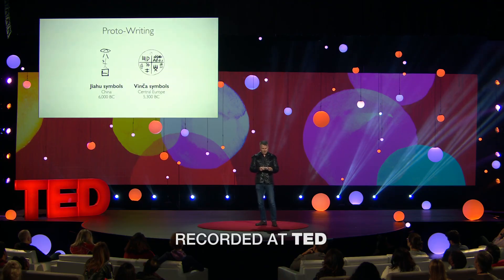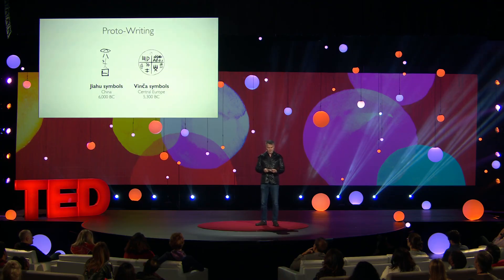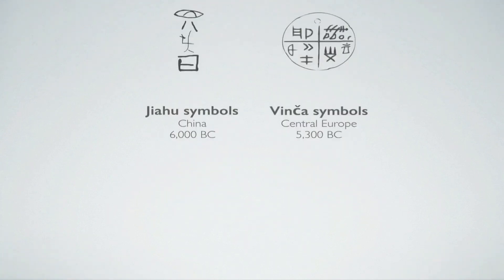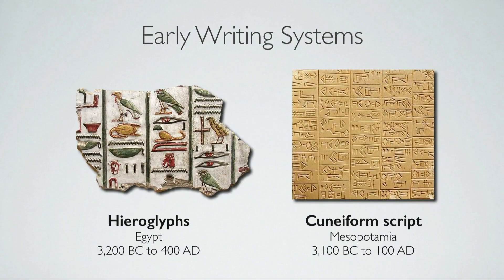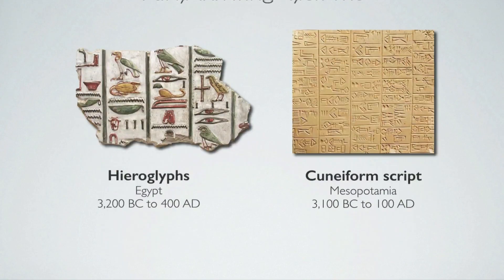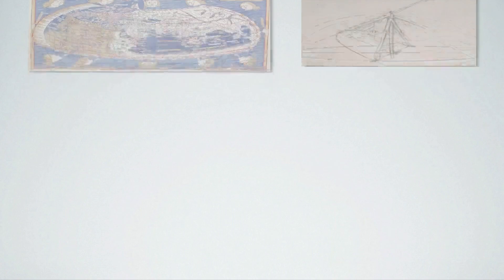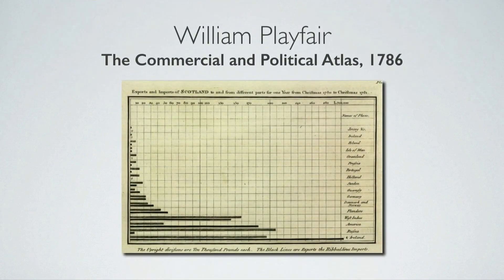Although humans have been around for a quarter million years, it was only 8,000 years ago that proto-writings began to surface. Nearly 3,000 years later, the first proper writing systems took shape. Maps have been around for millennia, and diagrams for hundreds of years, but representing quantities through graphics is a relatively new development.